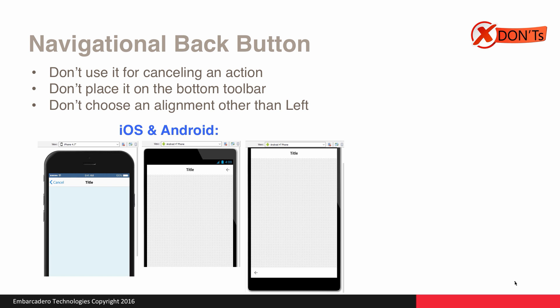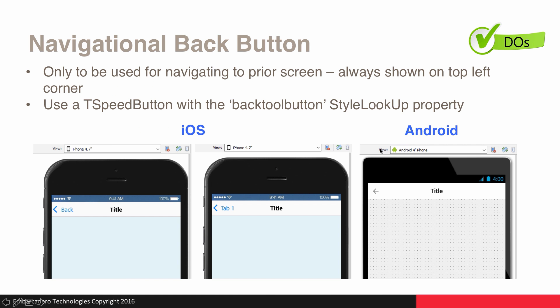Navigational back buttons are an important part of applications. It's important not to use them for canceling an action — instead, place a Cancel button on the toolbar. You don't want to place a back button on the bottom toolbar, and you don't want to choose an alignment other than left. A back button should always be displayed left-aligned on the top toolbar, and should never be right-aligned. It should only be used for navigating to the prior screen, always shown in the top left corner. Use a T-SpeedButton with the back tool button StyleLookup property — using text is optional, and on Android it always shows the icon by default.